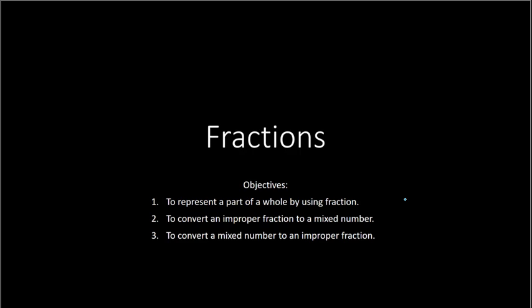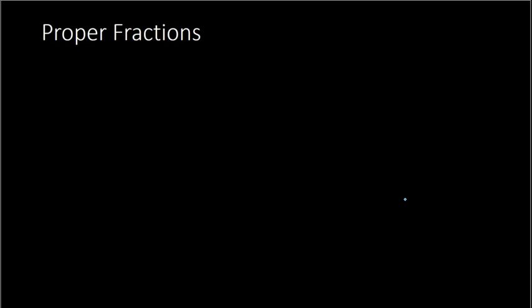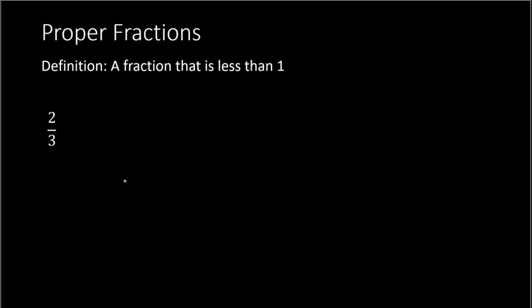Dealing first with proper fractions — a proper fraction is a fraction that is less than 1. So for example, 2 over 3 would be a proper fraction. With a fraction, the top is called the numerator, and the bottom of the fraction is called the denominator.